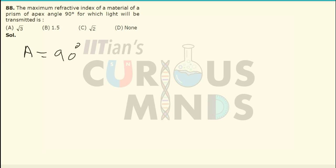The maximum angle of the prism should be such that it crosses this value. The angle of the prism should be greater than two times the critical angle. So the angle of the prism should be greater than two times the critical angle.